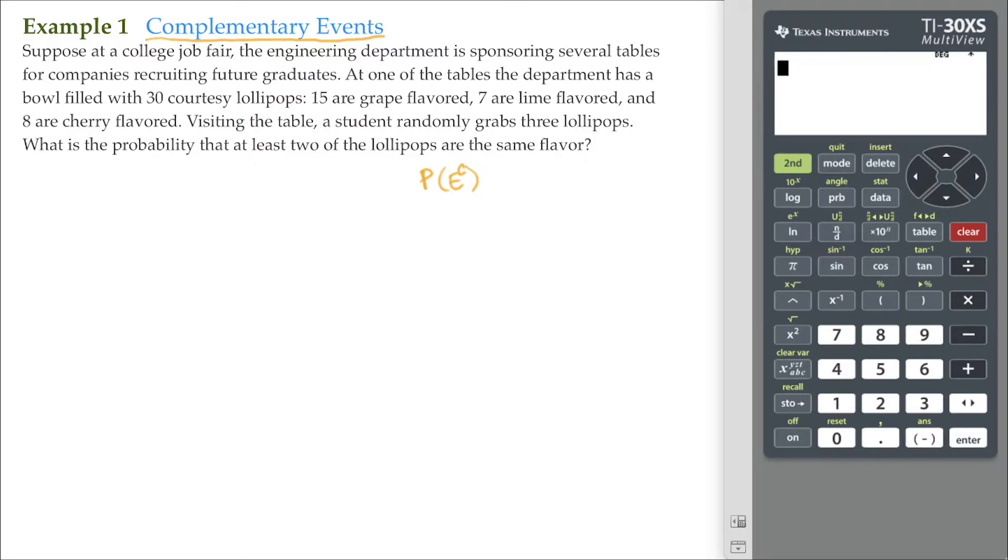And then this can be generalized as the probability of E complement. That's going to be equal to 1 minus the probability of the event occurring.